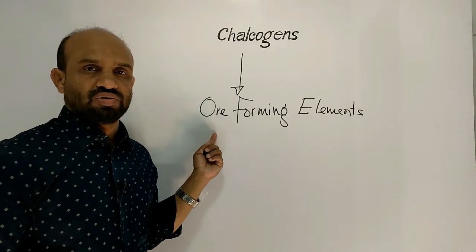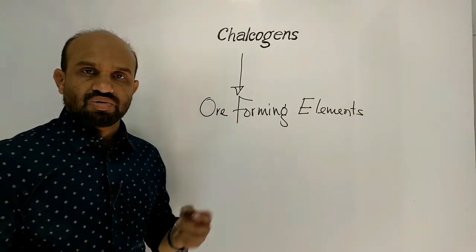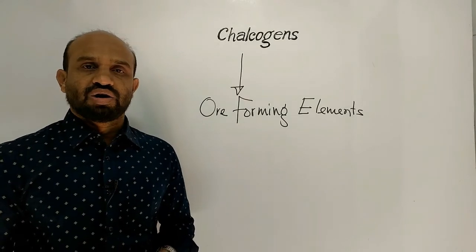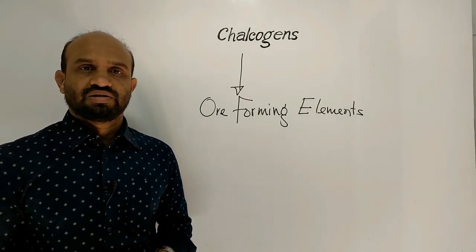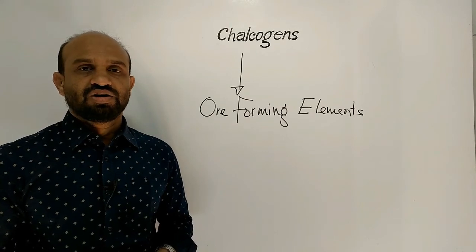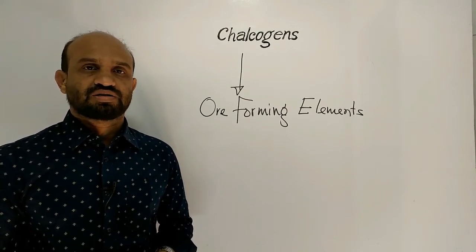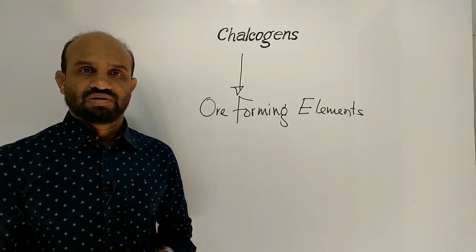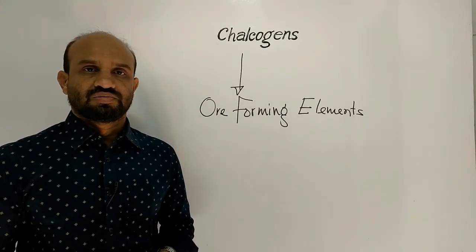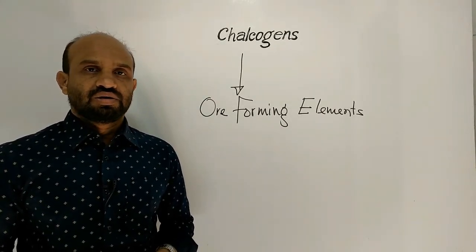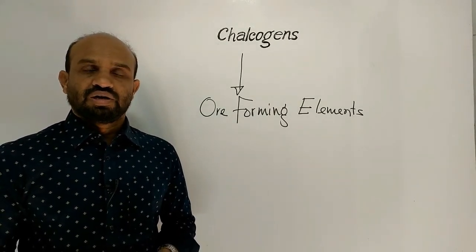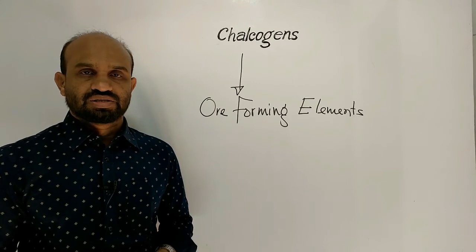What is ore? Ore is defined as a naturally occurring solid material from which metal or valuable mineral can be extracted profitably. This is ore. And ore-forming elements are elements of column 16.